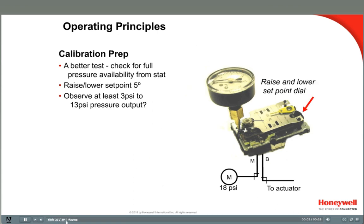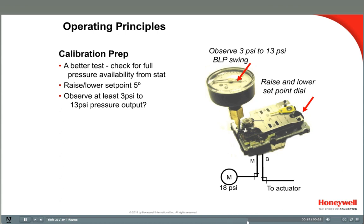A better operational check will determine if the thermostat can produce a full branch pressure output. Insert your branch line tap gauge and then turn the set point knob at least 5 degrees high and then 5 degrees low from where it was set. Verify that the branch line pressure can rise and fall at least from 3 to 13 pounds. If not, the stat may be defective and cannot be calibrated, or there may not be sufficient main air pressure.